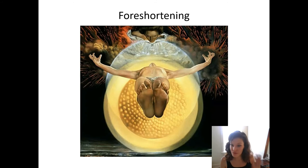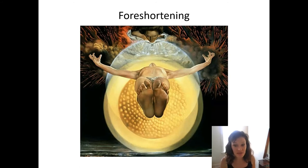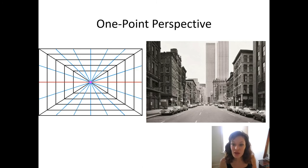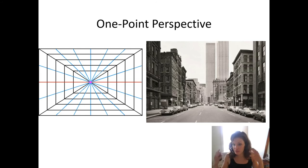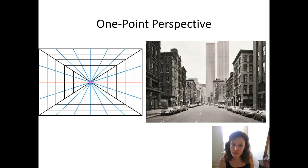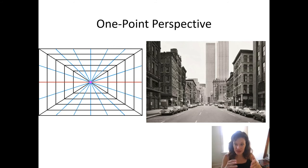We can also tell things are in space because things closer are bigger and things further away are smaller. I want to remind you about one-point, two-point, and three-point linear perspective, because this could help you sketch out the landscape on your canvas with a very light H pencil before going in to do the painting. One-point perspective is what we see when looking down a vista or across a big open field — a big open space in front with things to the sides.